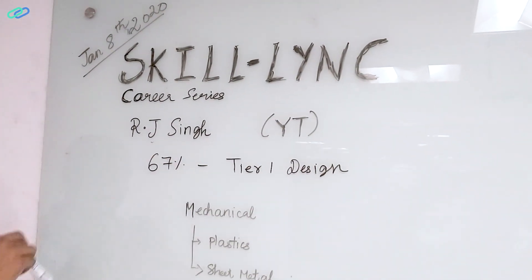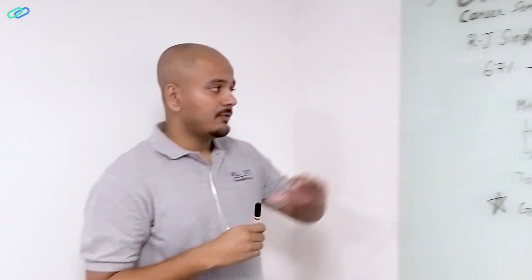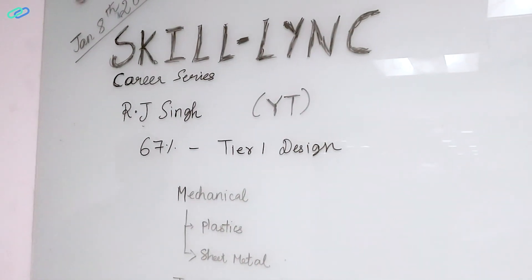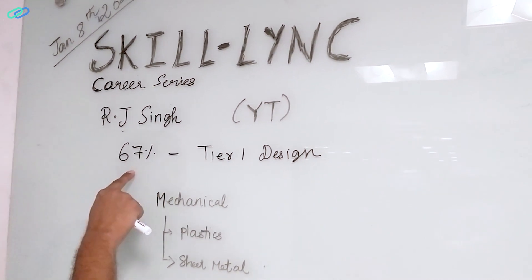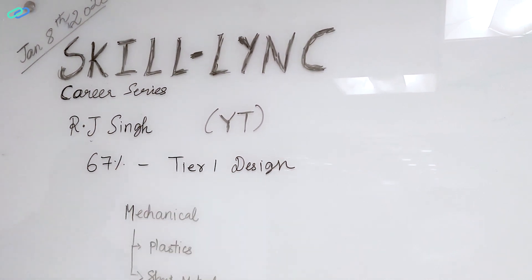This was posted on our YouTube channel. R.J. Singh's question is very simple. If you have a low percentage or GPA, 67% or 6.0 GPA, then how do I get a job in a tier one company, especially if it's a design-based job.